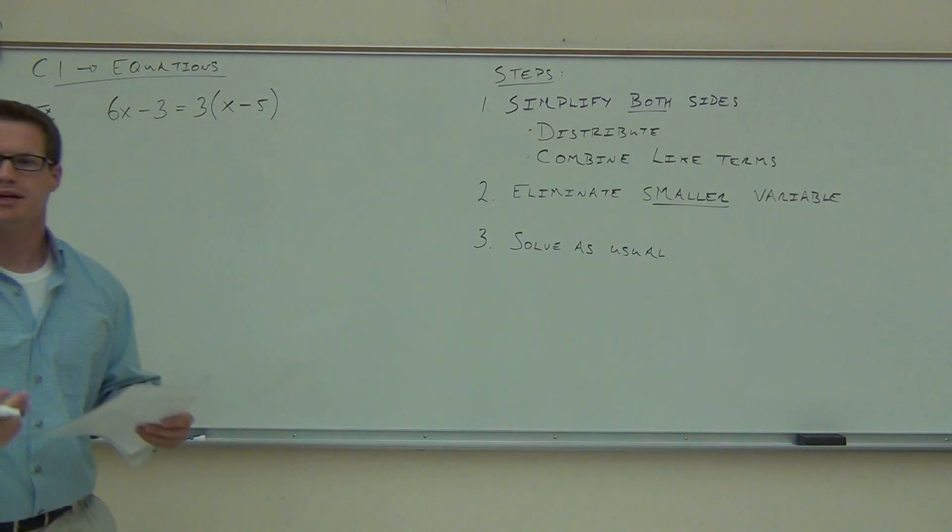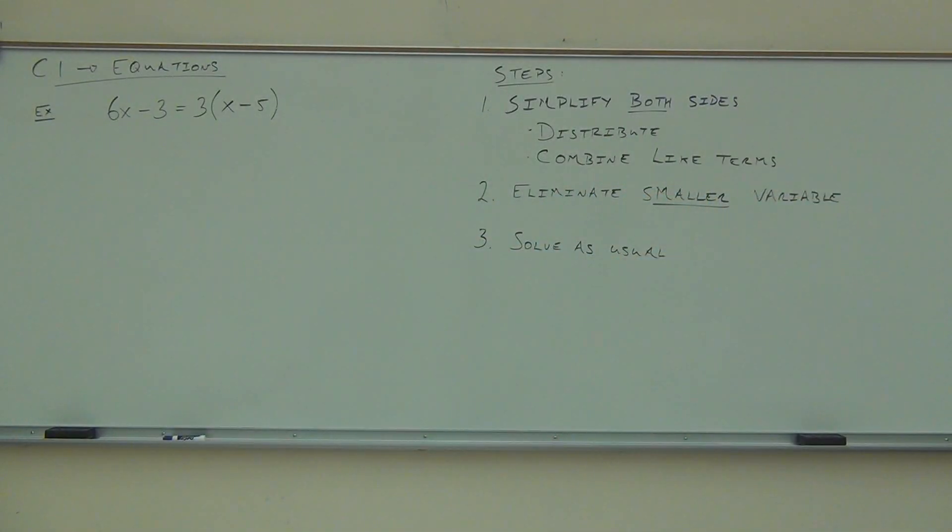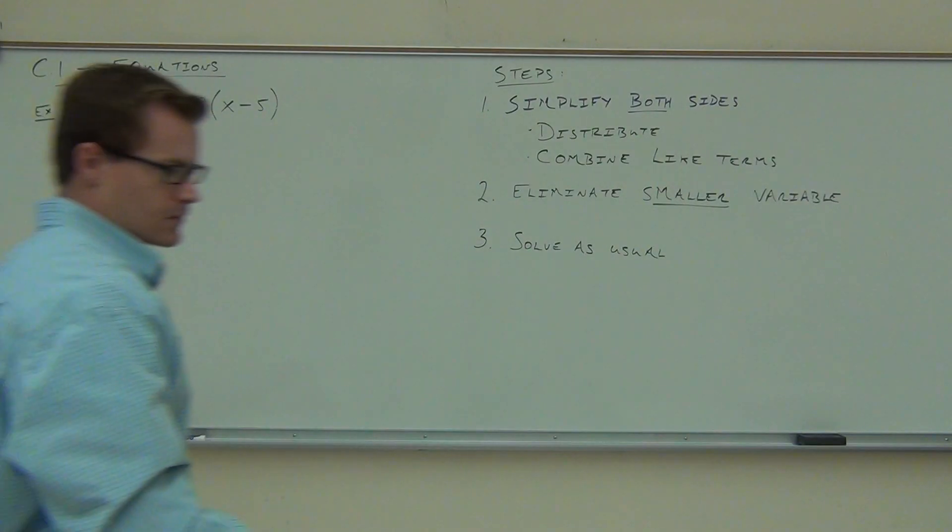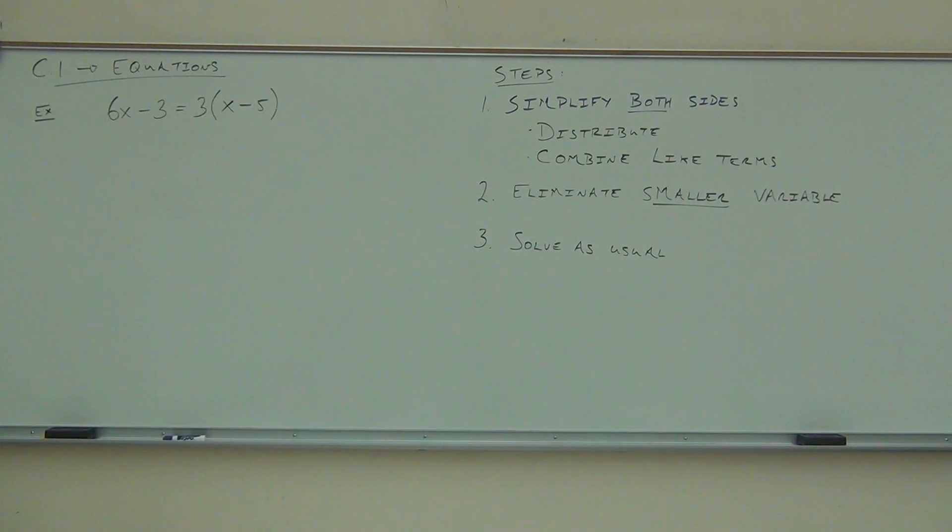So try this really quick. Let's do 6x minus 3 equals 3 times the quantity x minus 5. Follow the steps down. Do what we need to do. I want you to simplify both sides, get rid of the smaller variable, solve it, and then check to make sure you have the right answer, okay? I'll be walking around. This is what I'm normally going to do in this class. If you need help, raise your hand or just look at me like I don't know what's going on, and I'll help you out. Also, I'm going to pass out the roll sheet. Just find your name and put your initials.